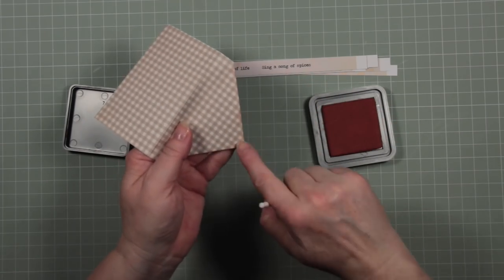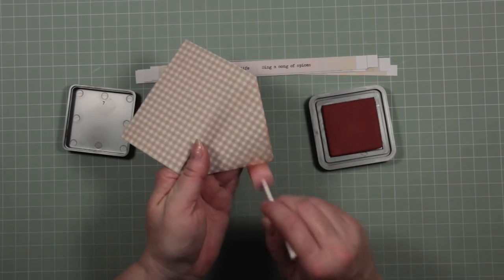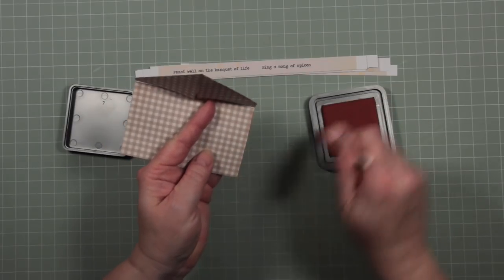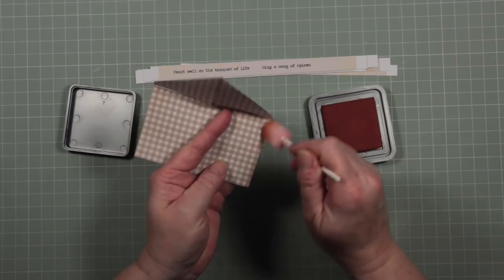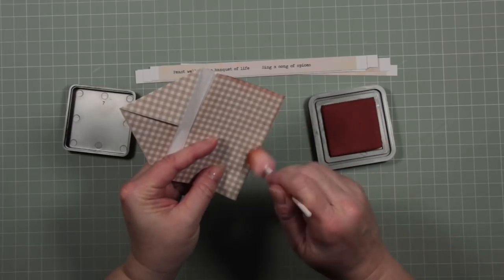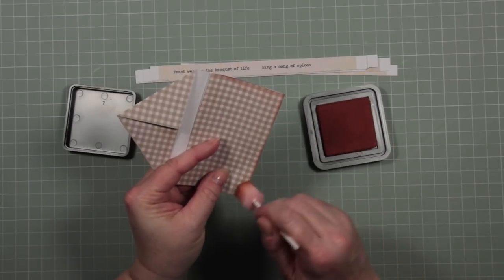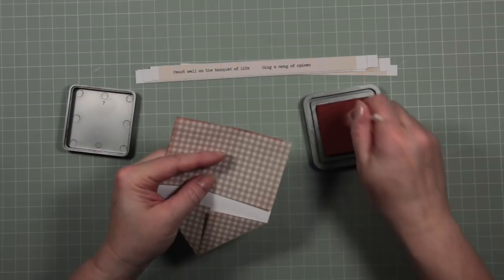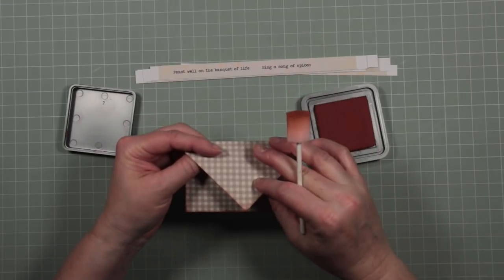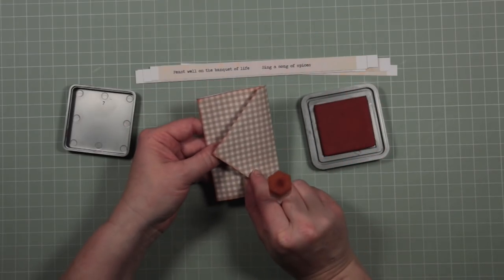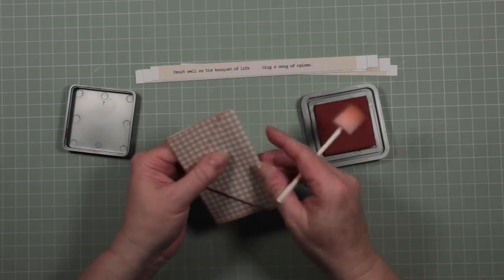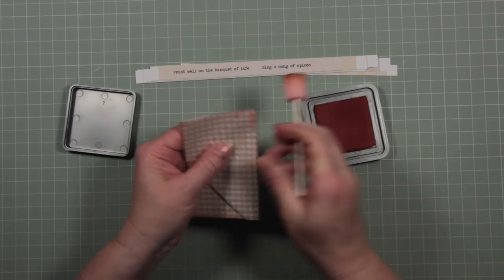Before I glue anything down, I'm just going to add a little color to the edge of my envelope. If you didn't want this sharp point here, you could fold that in again. For this first envelope, I'm going to leave it, and I'm only going to do the front of the envelope because the back will be stuck into my journal. I'm going to decide if I'm going to do inside, but I'm certainly going to do this top edge.